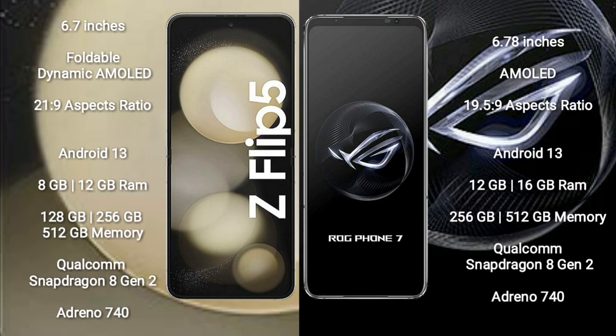or 512 GB of internal storage, with a Qualcomm Snapdragon 8 Gen 2 processor. The Asus ROG Phone 7 comes with 12 GB or 16 GB of RAM and 256 GB or 512 GB of internal storage, also with a Qualcomm Snapdragon 8 Gen 2 processor.